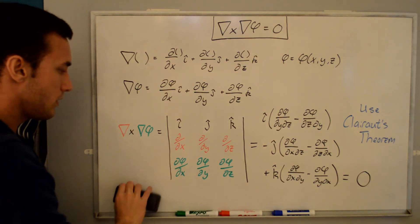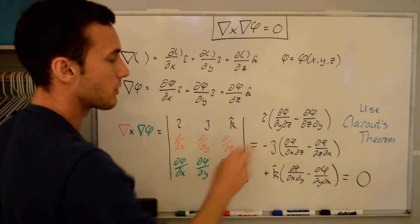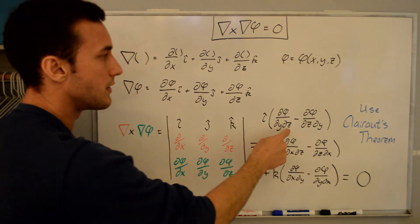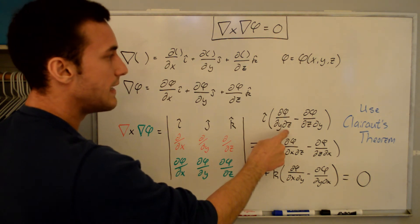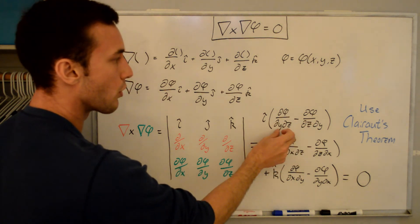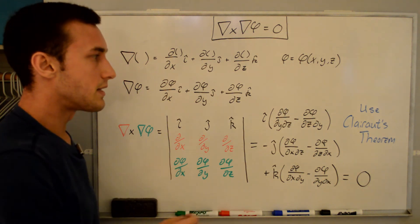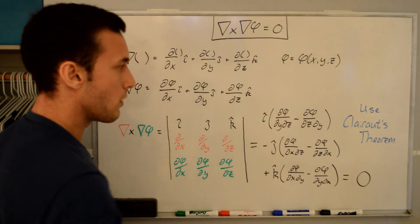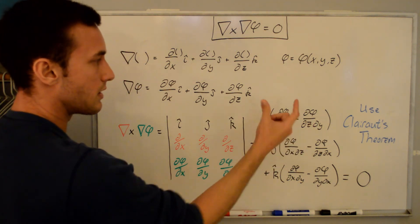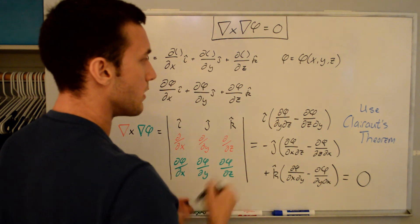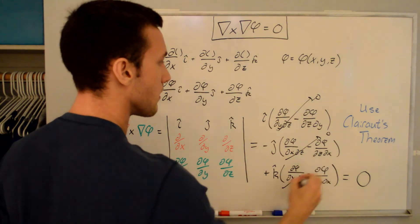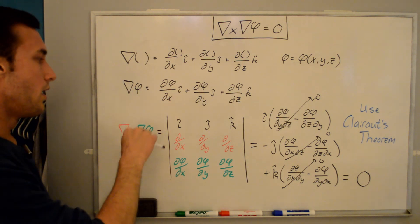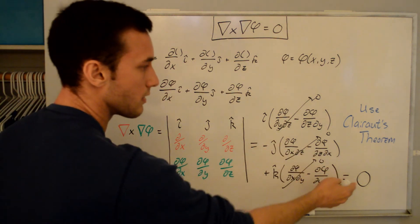Using Clairaut's theorem, you can see that these are mixed partial derivatives, and for almost all cases you'll have that d²phi/dy dz equals d²phi/dz dy. So if you change the order of partial differentiation, it doesn't change the final value. That means this minus this equals zero for all three terms — the i, j, and k components. So the cross product of del crossed with the gradient of a scalar ends up equaling zero.